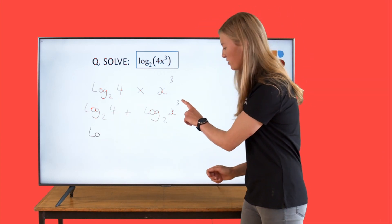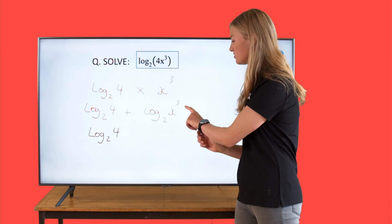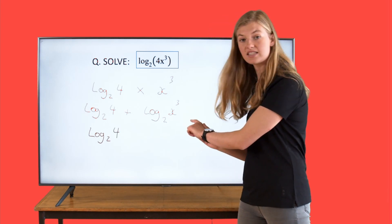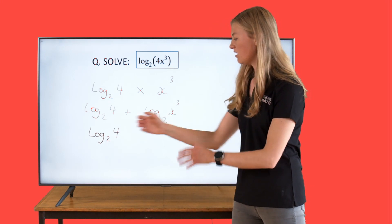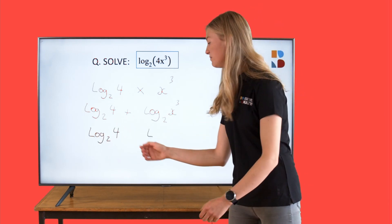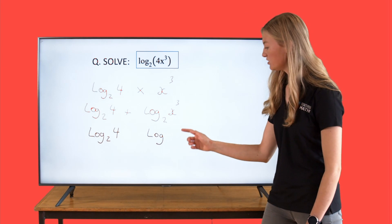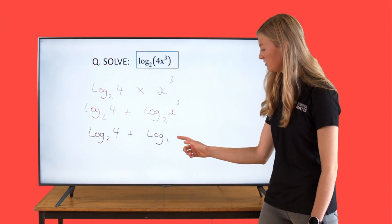This one, we have a power of 3 up here. So let's rewrite this in the same way that we would using the rule. So it's going to be log to the base 2 of 4, stays the same, plus log to the base 2, x.